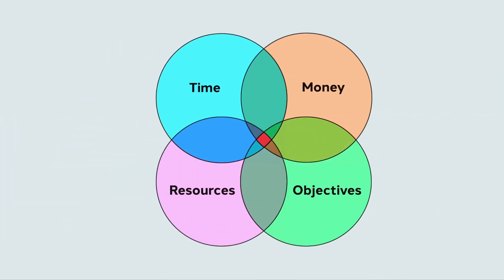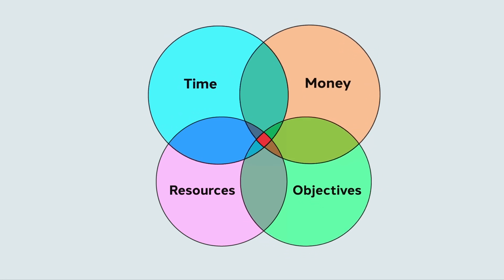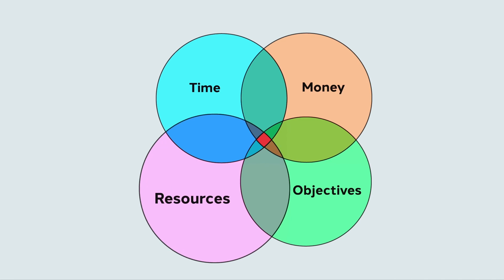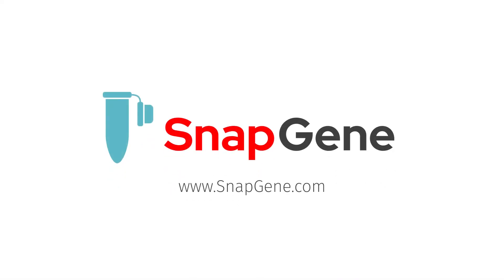Having gone through the strengths and weaknesses of the various techniques, let's go back to the big picture. This Venn diagram simplifies the considerations you need to take into account when choosing a cloning technique. You need to establish your goals, consider how much time and money are at your disposal, and factor in what other resources are available to you. Remember, the significance of these factors may shift from experiment to experiment. But finally, don't be afraid to try something new. To learn more about molecular cloning, visit snapgene.com.